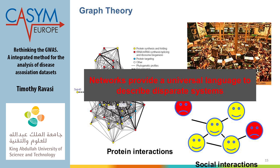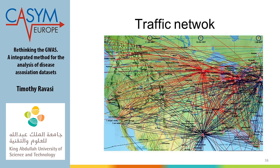Networks provide a universal language to describe and analyze these systems. Here are some examples. A traffic network: each node is a city and each link means a plane flies between those cities. I'll show several networks that, amazingly, although built from different entities, share similar properties.